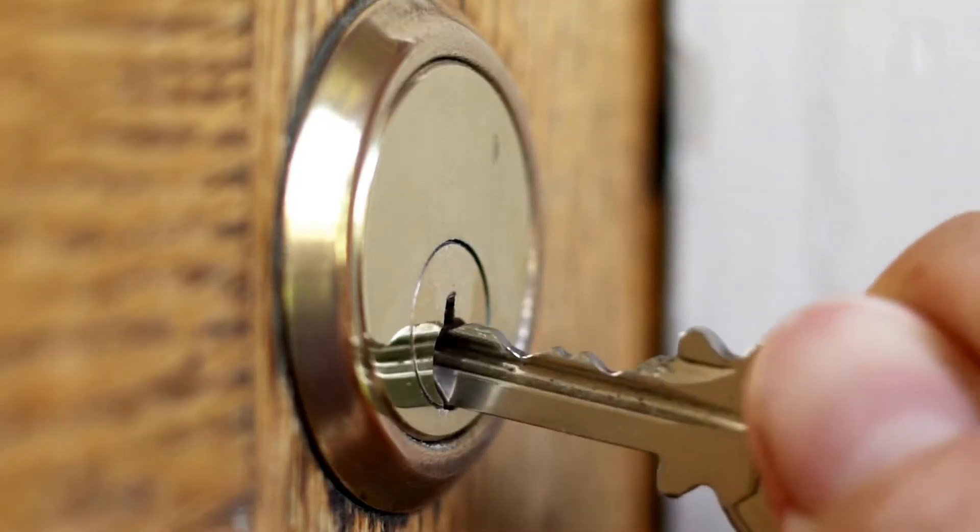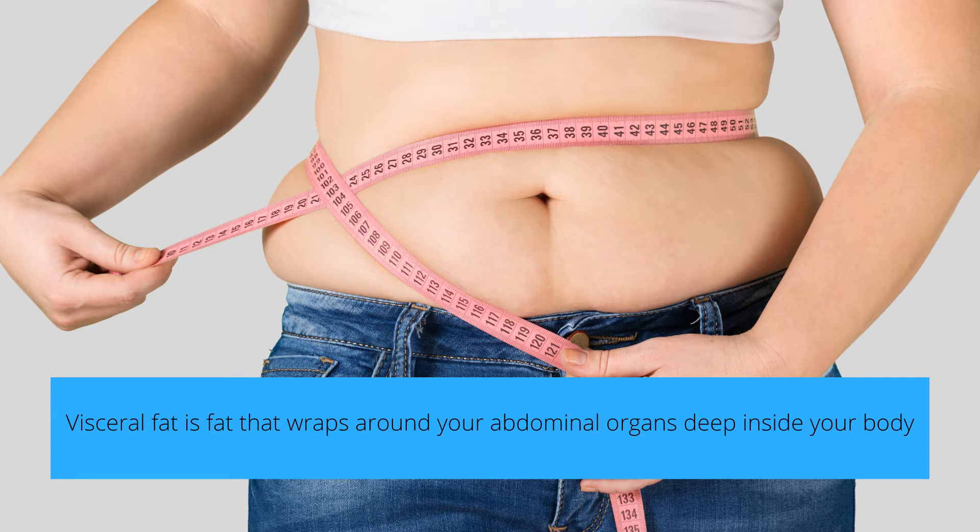So what happens when we become insulin resistant? Basically, when we overeat carbs for a prolonged period of time, the insulin — which is the key and the bloodstream is the lock — this system becomes inefficient. The carbohydrate molecule, which is glycogen, doesn't reach the bloodstream, which means it doesn't get absorbed by our muscles and liver to be used for energy. What happens to these carbohydrates when they have nowhere to go? They get stored as visceral fat in our belly.